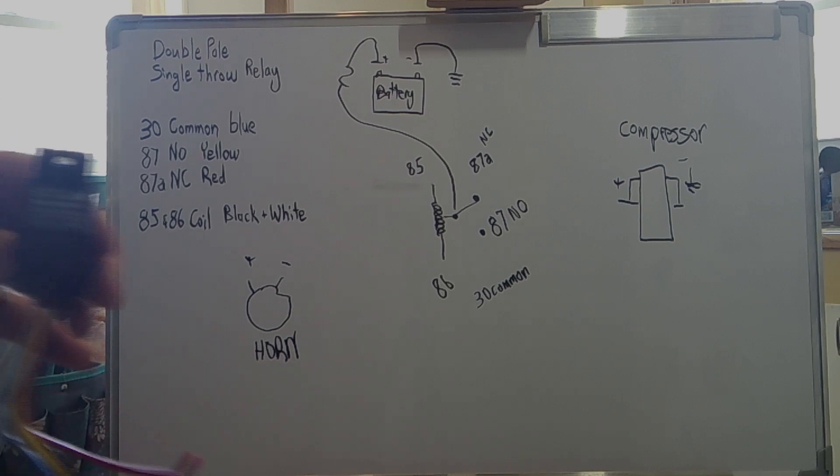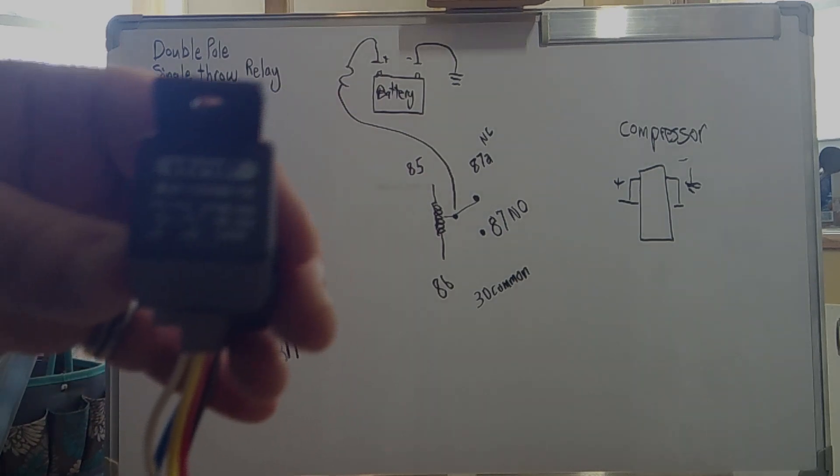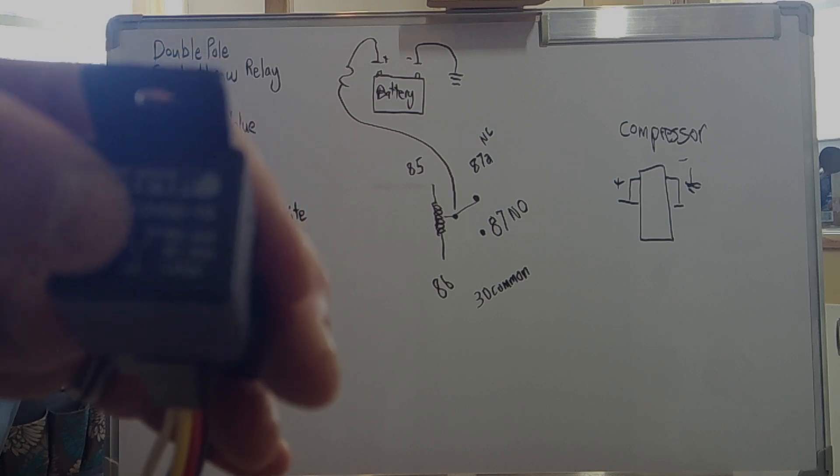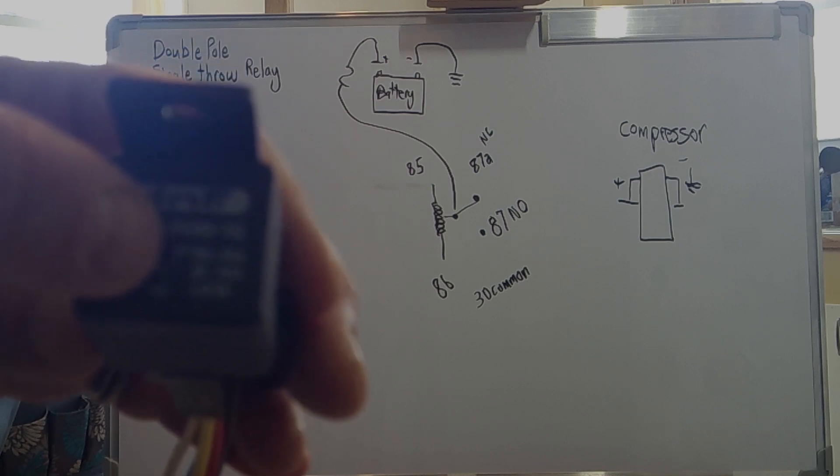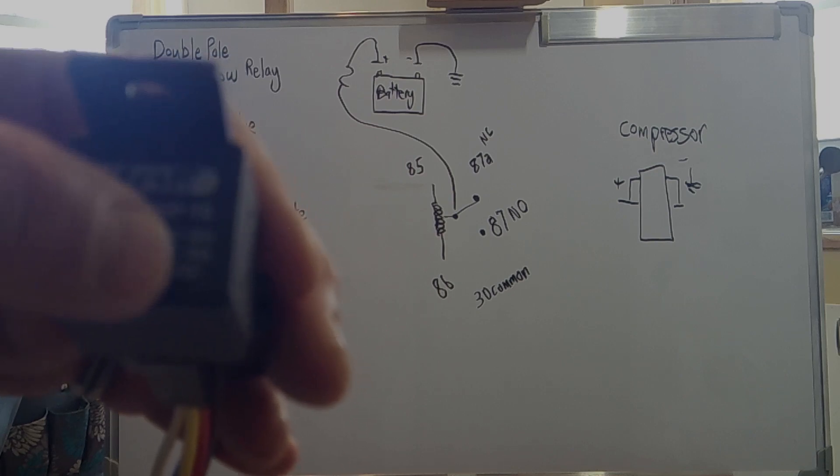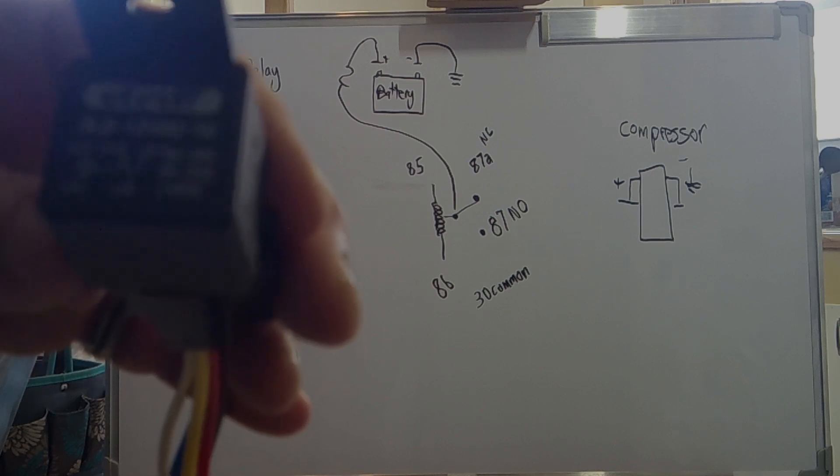This is a Bosch 12 volt relay. It's a double pole single throw relay. Your 87 pin, which is your normally open pin, is rated at 40 amps. Your normally closed is rated at 30 amps, and the coil is a 12 volt coil.